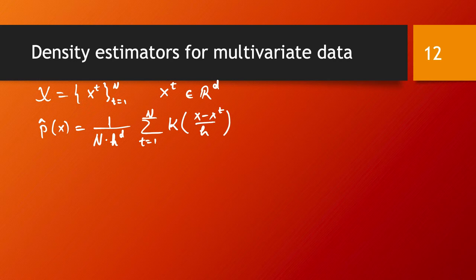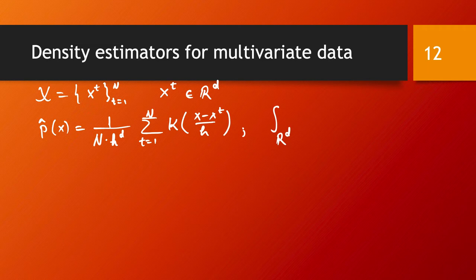And obviously the argument of this kernel function is now a d-dimensional vector. And you have to choose the kernel function carefully and in particular it should be in such a way that it integrates to 1, so the integral over R to power d of k(x) should be equal to 1.